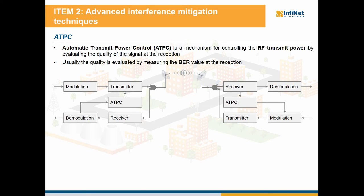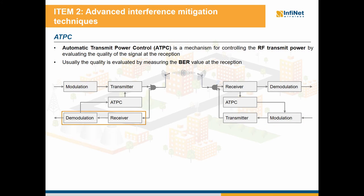Next, let's introduce the automatic transmit power control feature. ATPC is a mechanism for controlling the RF transmit power by evaluating the quality of the signal at the receiver side. Usually the quality is evaluated by assessing the RSSI value. As we can see in the picture, the receiver runs the ATPC algorithm and decides whether the power should be increased or decreased. The command is sent back to the peer end that demodulates the ATPC command and informs the transmitter to adjust the power accordingly.